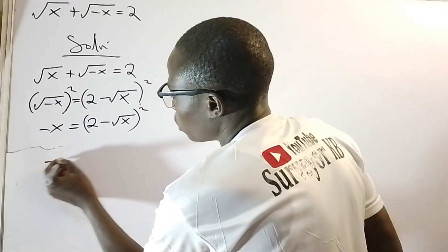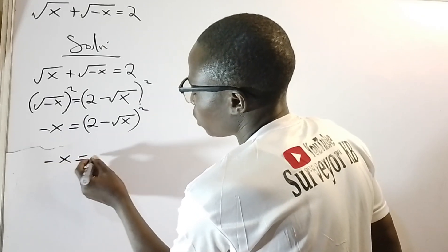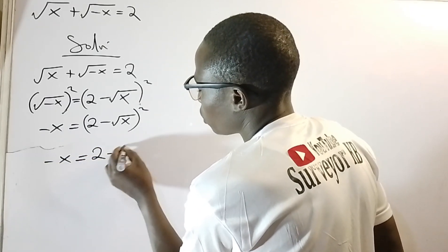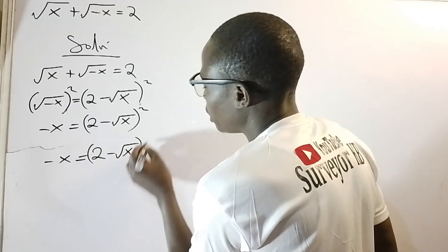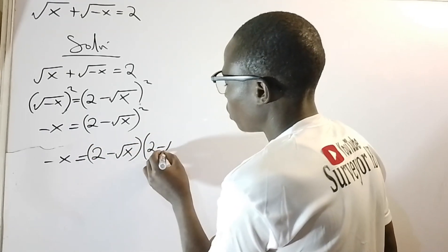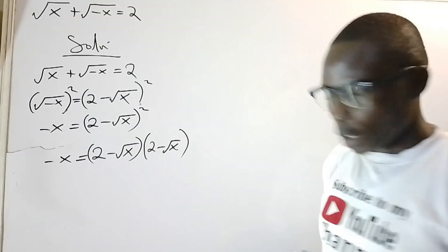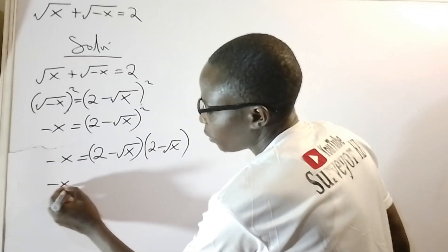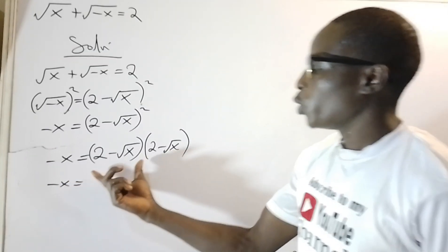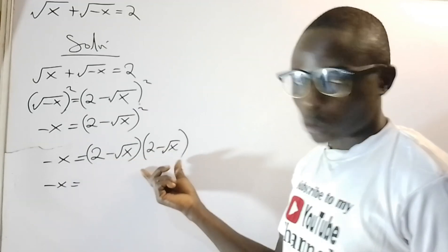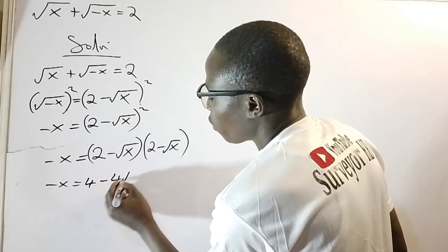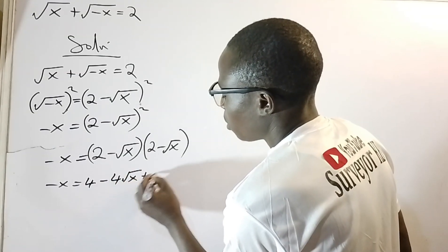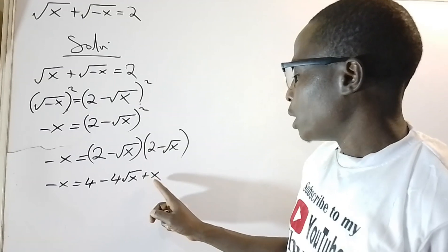We know that this bracket will actually be written in two places, meaning: negative x equals (2 minus root x) multiplied by another (2 minus root x). Expanding, we get negative x equals 4 minus 4 root x plus x.